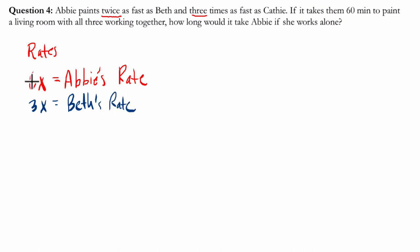So if you chose 12 for Abby, you would choose 6 for Beth and calculate everything from there. And then Kathy's rate is 3 times slower than Abby's rate, so it's 2x. So we have their rates.